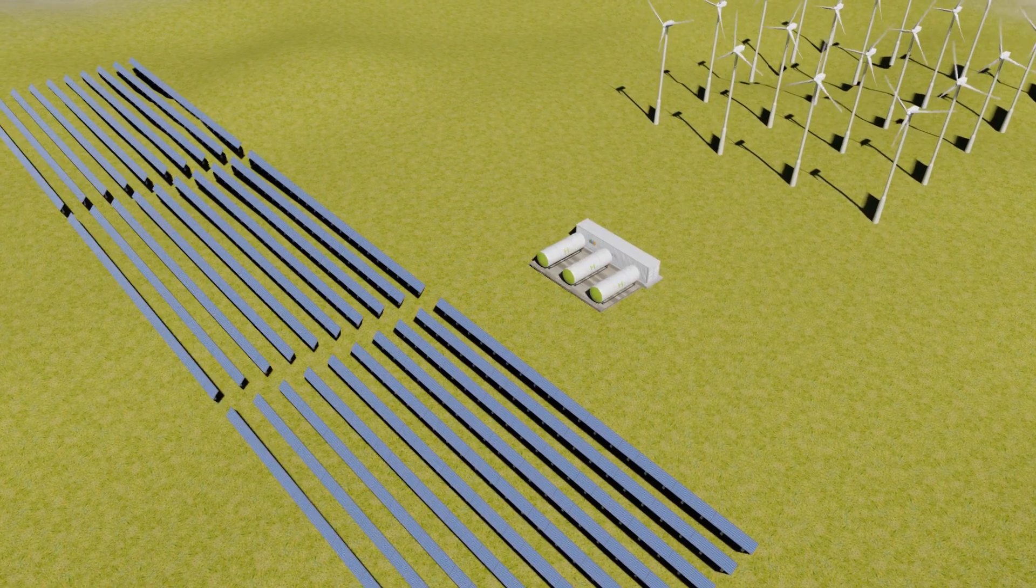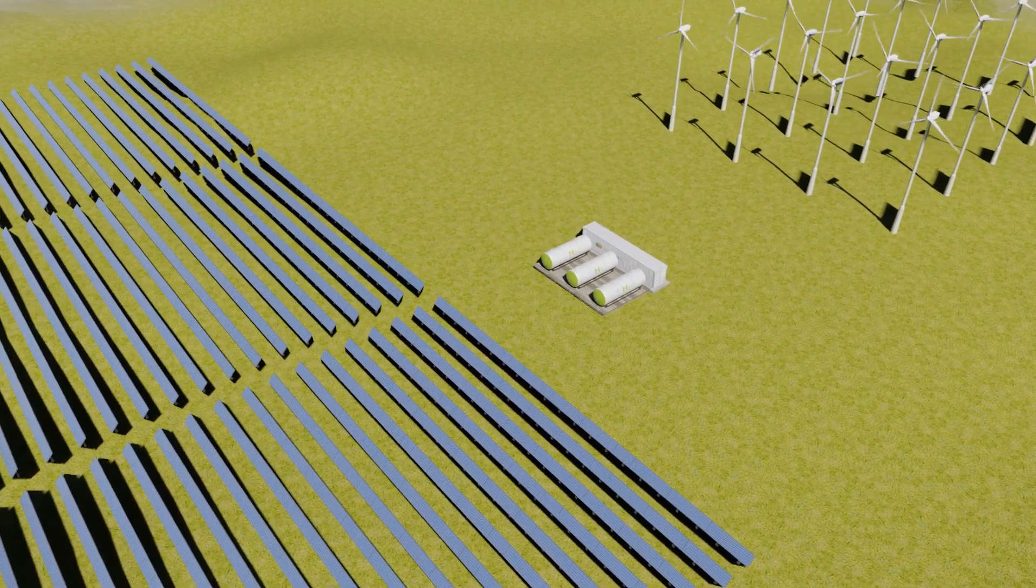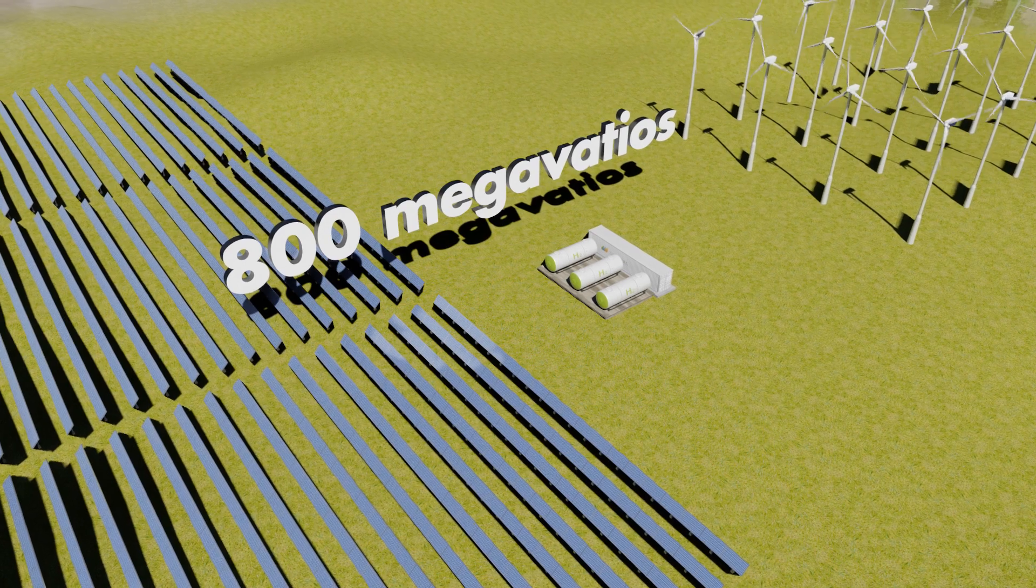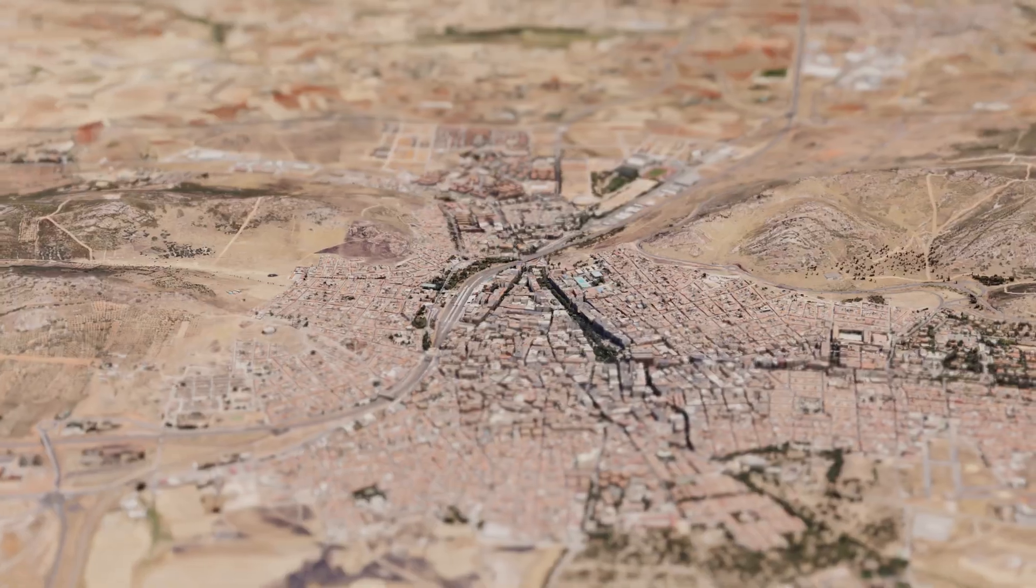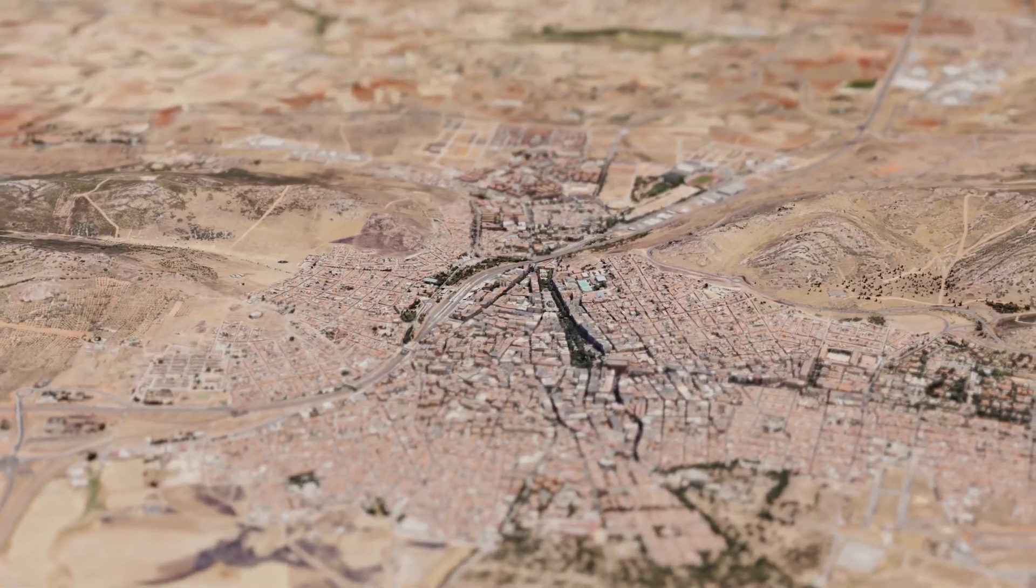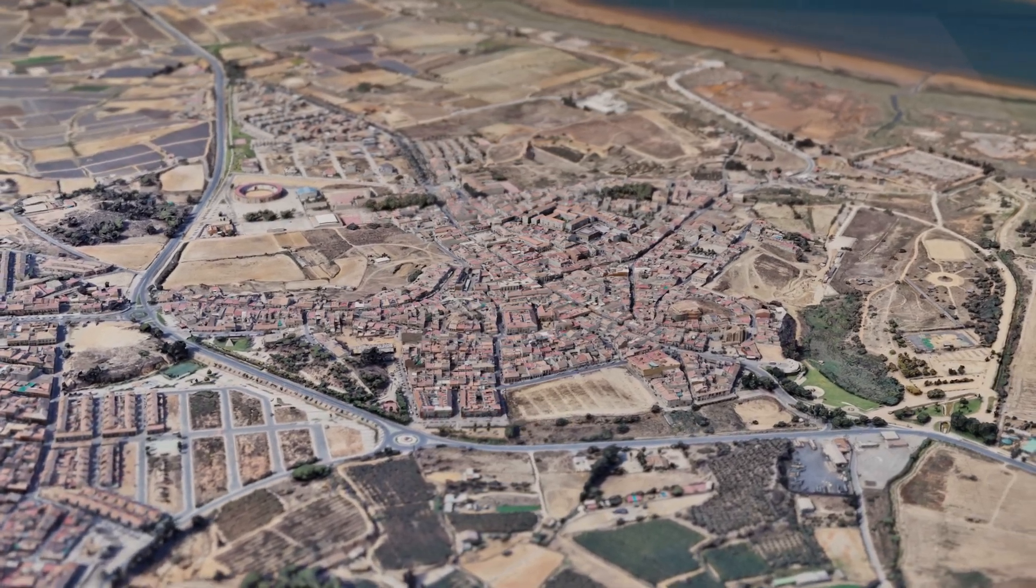Iberdrola is a pioneer of this technology and is planning to install 800 MW of green hydrogen to supply electricity to the plants of Fertiberia in Pertolano, Ciudad Real and Palos de la Frontera, Huelva.